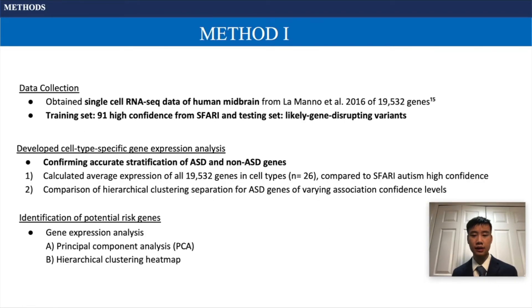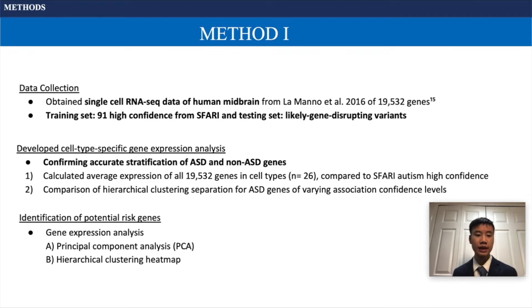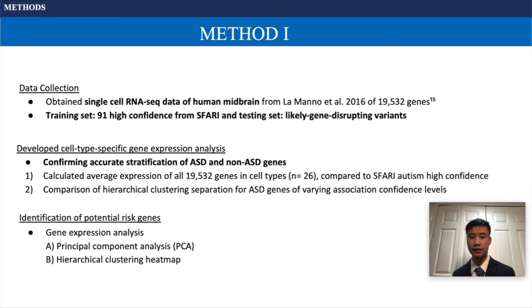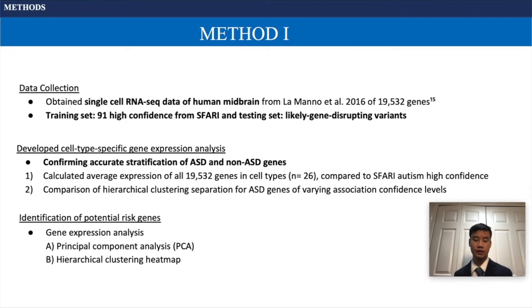Single-cell RNA-seq data of the human midbrain was obtained, along with a training set of 91 high-confidence genes from the SFARI database and a testing set of likely gene-disrupting variants. I then developed a cell-type specific gene expression analysis and confirmed accurate stratification of autism and non-associated genes through two tests. The first was by calculating the average expression of all 19,532 genes in the 26 cell types and comparing them to the SFARI autism high-confidence averages. The second test was to compare the hierarchical clustering separation for autism genes of varying association confidence levels.